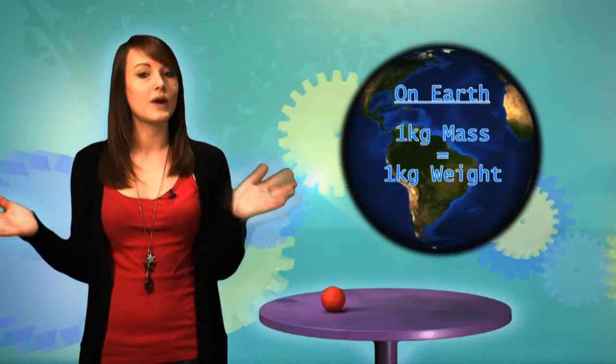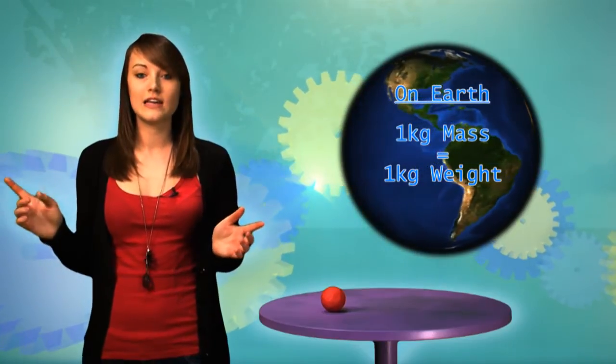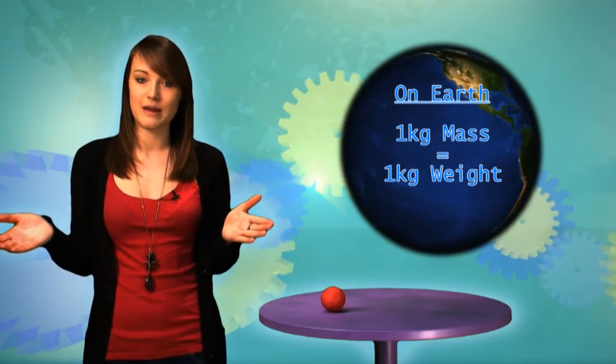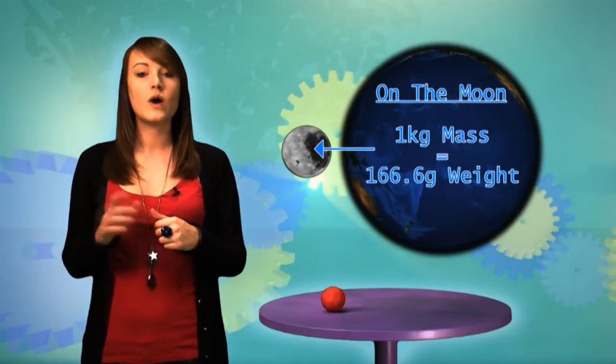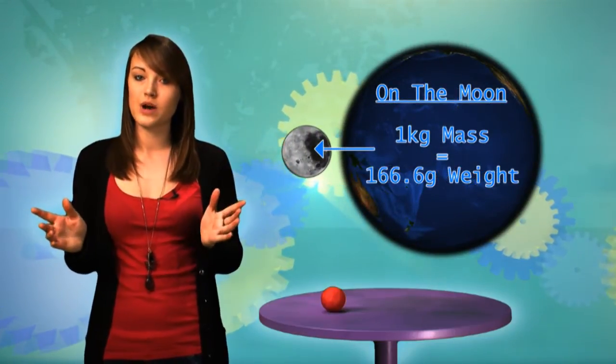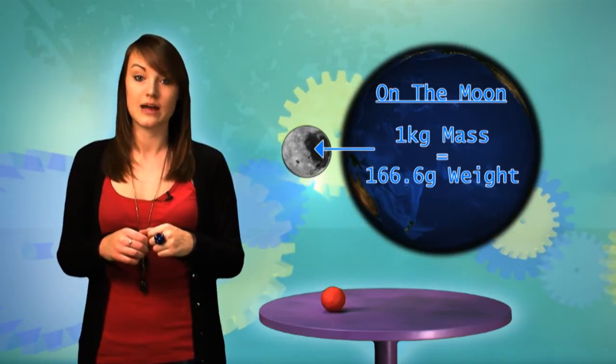Now I said earlier that under Earth's gravity, mass and weight are the same, so a one kilogram mass of material would also weigh one kilogram. But on the Moon, which is one sixth of Earth's gravity, a one kilogram mass would only weigh 166.6 grams. So mass is always constant, it's always the same, but weight is not.